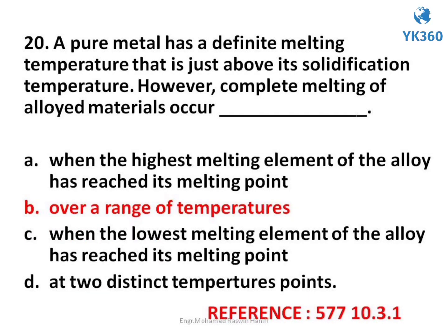Question number 20. A pure metal has a definite melting temperature that is just above its solidification temperature. However, complete melting of alloyed materials occurs — options are: A. When the highest melting element of the alloy has reached its melting point, B. Over a range of temperatures, C. When the lowest melting element of the alloy has reached its melting point, D. At two distinct temperature points. Answer is option B. Over a range of temperatures.